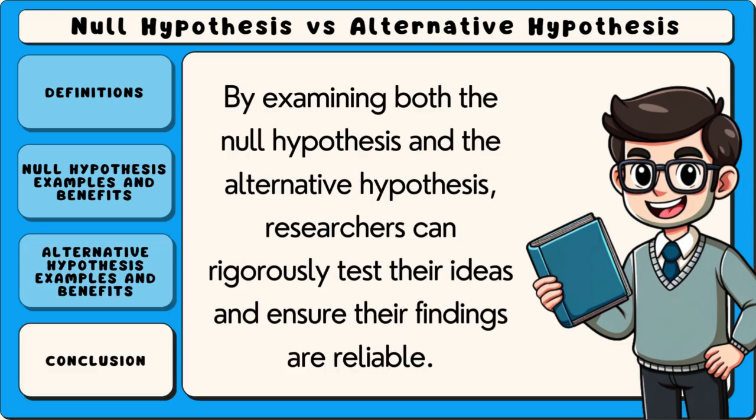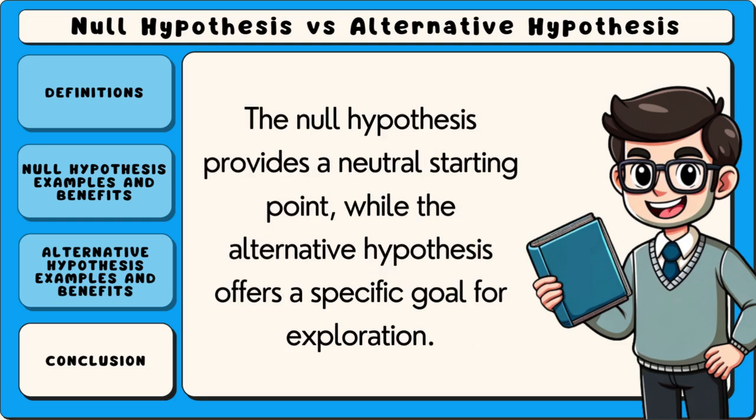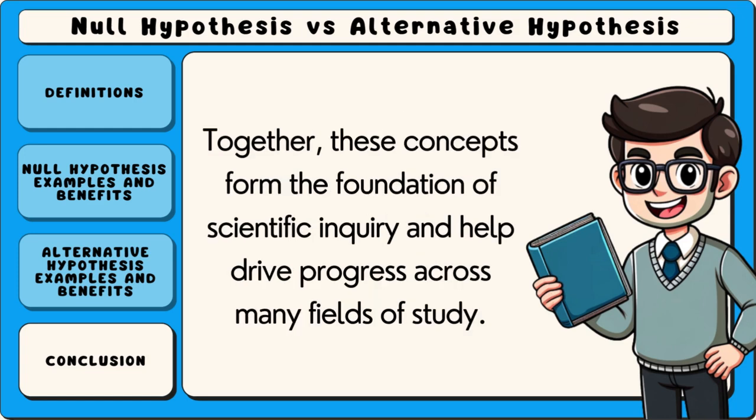By examining both the null hypothesis and the alternative hypothesis, researchers can rigorously test their ideas and ensure their findings are reliable. The null hypothesis provides a neutral starting point, while the alternative hypothesis offers a specific goal for exploration. Together, these concepts form the foundation of scientific enquiry and help drive progress across many fields of study.